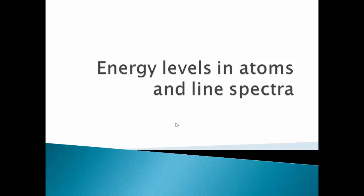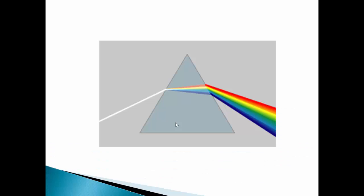In this video we are going to discuss energy levels in atoms and line spectra. Let us revise spectrum first. Remember the splitting of white light when passed through a prism into its subsequent colors. These colors together are called a spectrum.